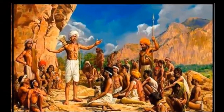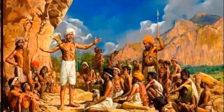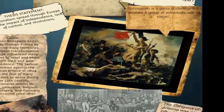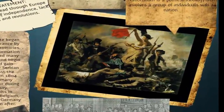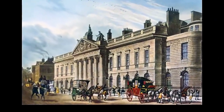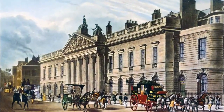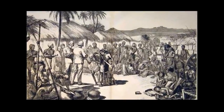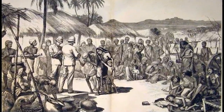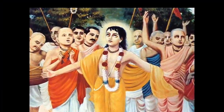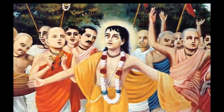Peasant uprising. Peasant revolts began to erupt in the early 19th century and continued till the very end of British rule in India. Many of these revolts were led by religious leaders who treated British rule as an invasion into the socio-religious life of the people of India.